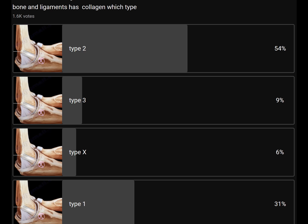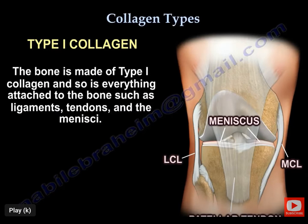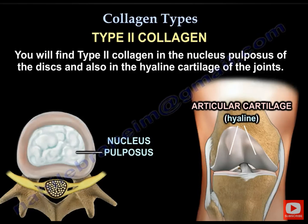Bone and ligaments contain collagen — which type? It is type 1 collagen. Bone and everything attached to bone is type 1. Cartilage is type 2 — the nucleus pulposus and hyaline cartilage are type 2.